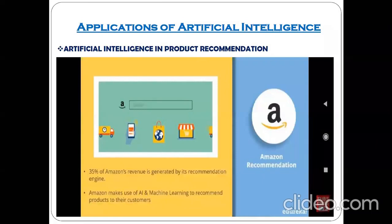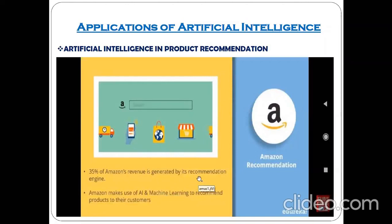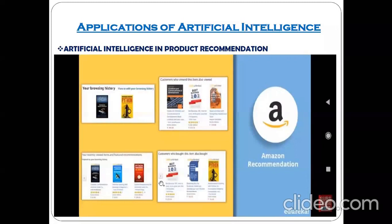I have shown this in the live example in the second video I uploaded. Here I just want to show you the ratio: 35% of Amazon revenue is generated by its recommendation engine. Amazon makes use of artificial intelligence and machine learning to recommend products to their customers.